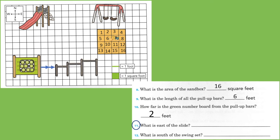Number eleven. What is east of the slide? Well, let's see. There's our compass rose. And remember, east is to the right when you're looking at a map. There's the slide. And there is the swings. The swings are to the east of the slide.